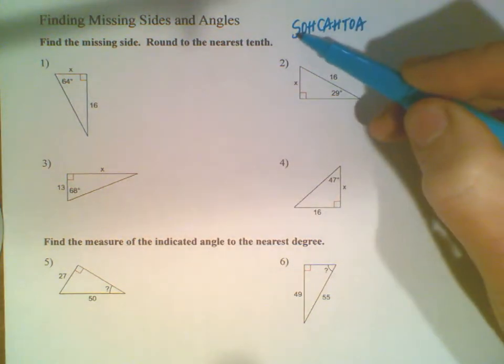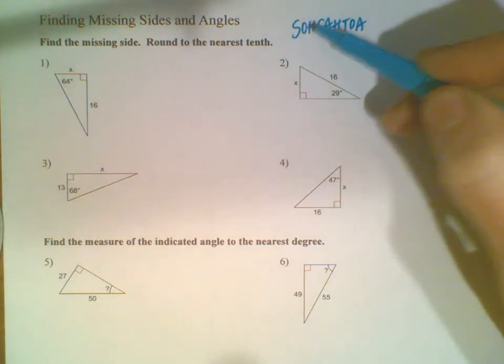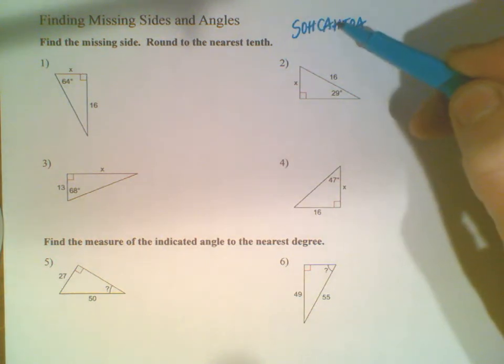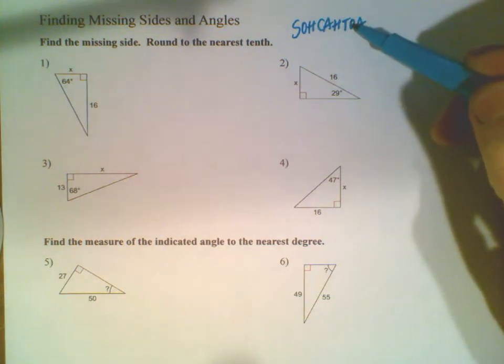Sine is opposite over hypotenuse, cosine is adjacent over hypotenuse, tangent is opposite over adjacent.